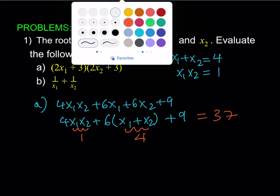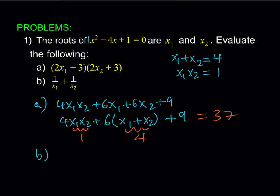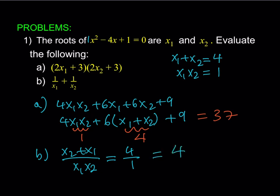For part b, I make a common denominator, which gives me x2 plus x1 divided by x1 times x2. We know the sum equals 4 and the product equals 1, so this is going to equal 4. By knowing the basics — sum and product — I can evaluate different kinds of expressions.